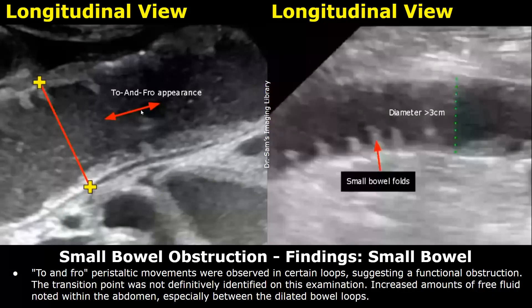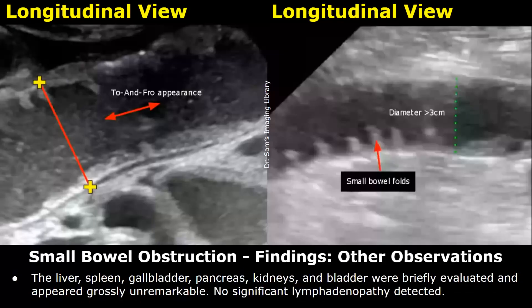To-and-fro peristaltic movements were observed in certain loops, suggesting a functional obstruction. The transition point was not definitively identified on this examination. Increased amounts of free fluid noted within the abdomen, especially between the dilated bowel loops. The rest of the scan was unremarkable.